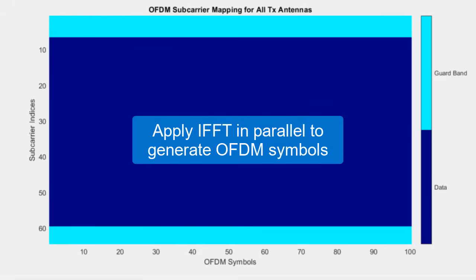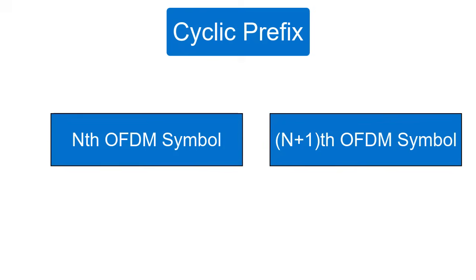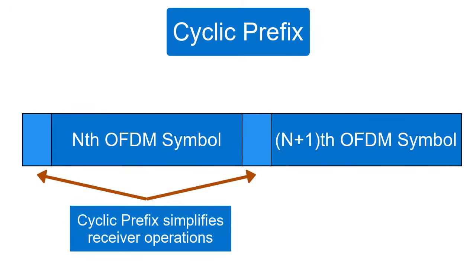Next, an inverse fast Fourier transform, or IFFT, is applied to the resource grid to create the OFDM symbol. A cyclic prefix is then added to the front of every OFDM symbol. The cyclic prefix takes the last group of samples in the OFDM symbol, copies, and moves them to the front. Adding a cyclic prefix to each OFDM symbol greatly simplifies equalization operations at the receiver.